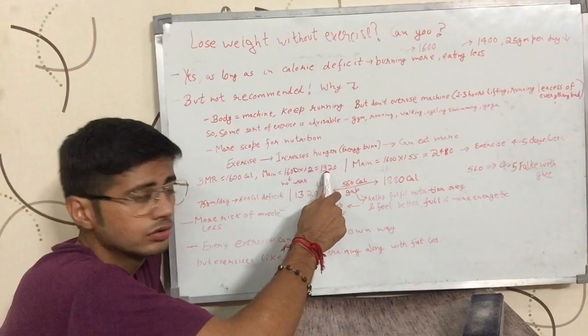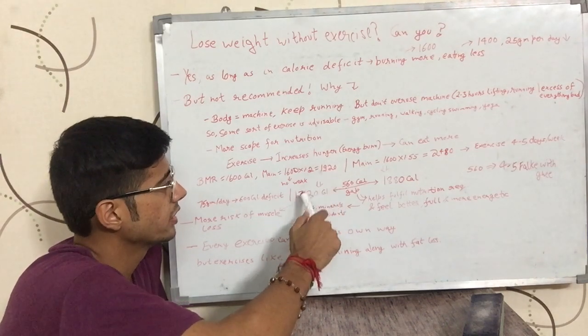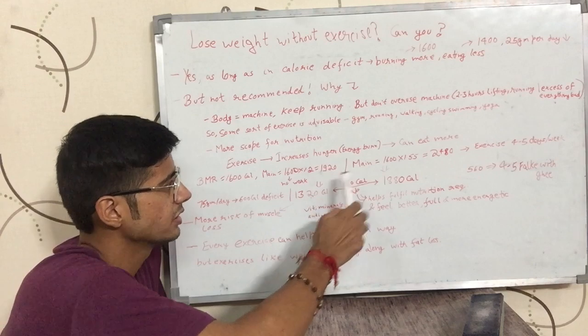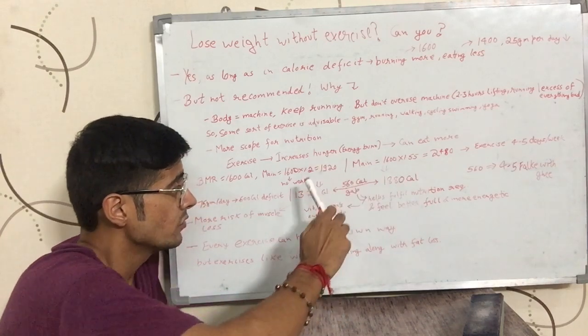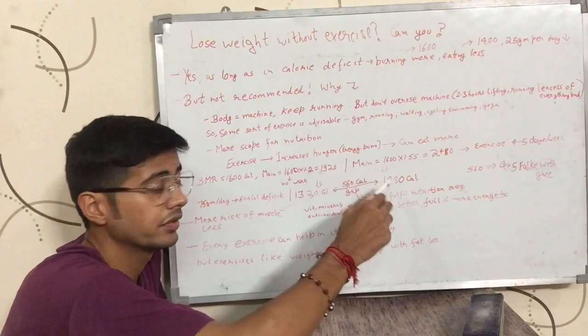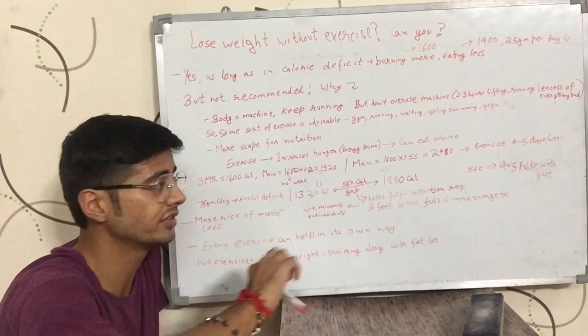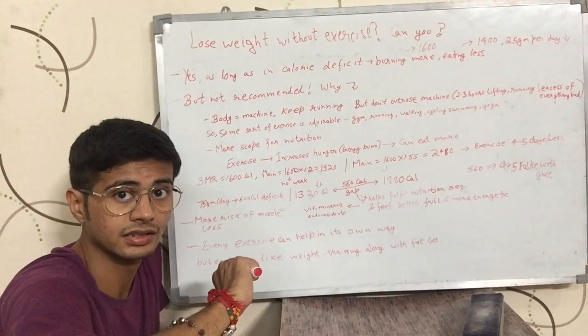So in the first case, when he is doing nothing but going to the office, coming back, eating and sleeping, he would eat 1320 calories. In the second case, when he is exercising, he would be eating 1880 calories. Both of these have a gap of 560 calories.